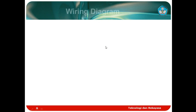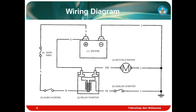Berikutnya adalah diagram wiring tentang aliran arus listrik pada motor starter. Dari gambar wiring-nya, terdapat beberapa komponen: yang pertama baterai, yang kedua relay starter, yang ketiga motor starter, yang keempat sekring, yang kelima kunci kontak, dan yang terakhir adalah saklar starter atau tombol starter.